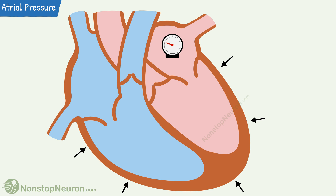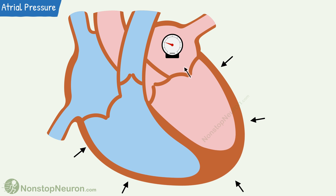The next phase is the isovolumetric contraction of the ventricles. Two things happen during this. One, as the atrioventricular valves close, there is a little backflow of blood. And two, as the ventricles contract as closed chambers, there is bulging of atrioventricular valves into the atria. This produces a rise in the atrial pressure.